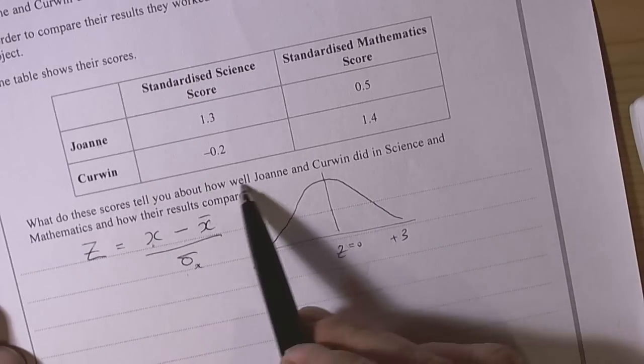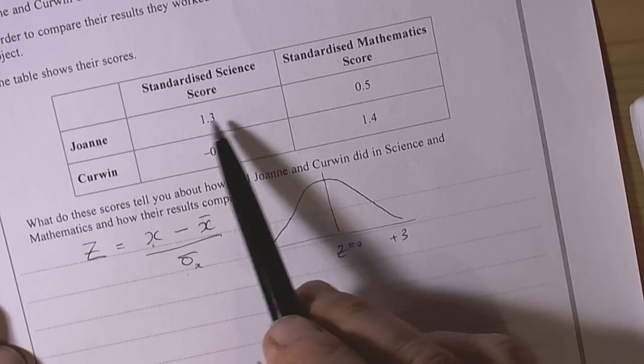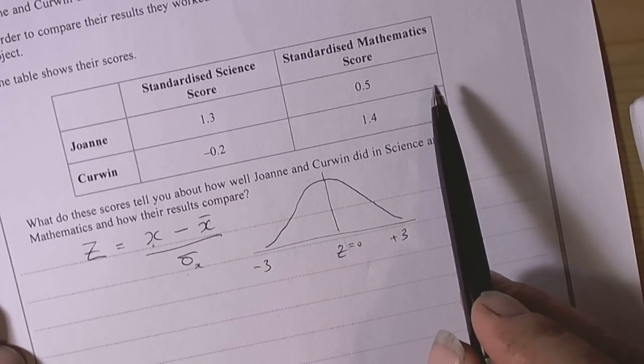So let's have a look. So science, mathematics. We can see that Joanne had positive scores in both tests. So she did better than average in both subjects.